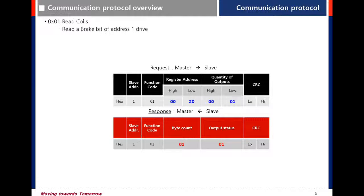Read Coil example: read the brake bit. Slave address is node ID 1, function code 01, register address 20 — the brake address is 20. Quantity of output is 1. Output status 01 means brake is on.